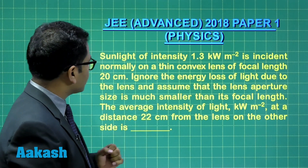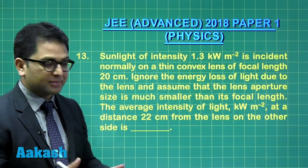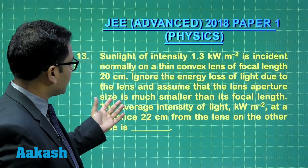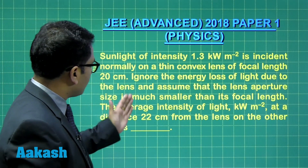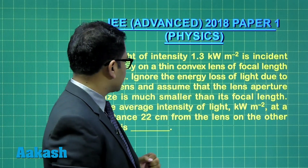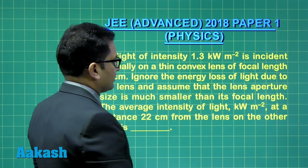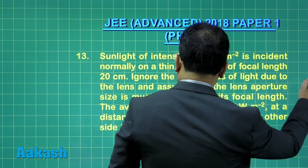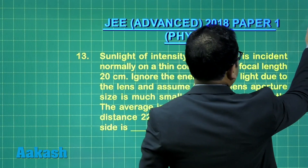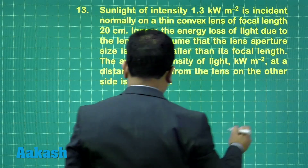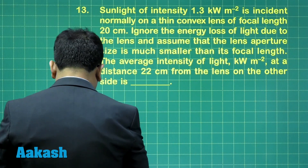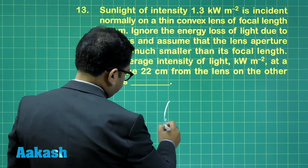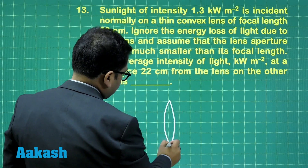Ignoring the energy loss of light due to the lens — that means absorption — and assuming that the lens aperture is smaller than its focal length, we need to find the average intensity in kilowatt per meter square at a distance 22 centimeter from the lens on the other side. So the idea is something like this: 22 centimeter, here is the lens.